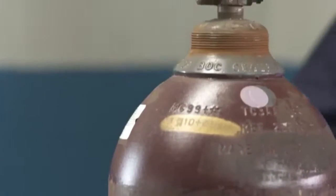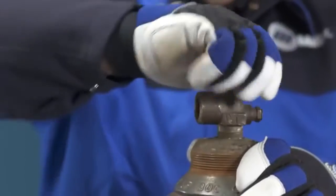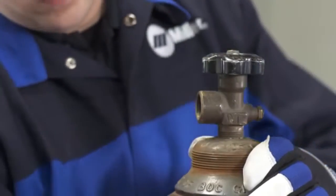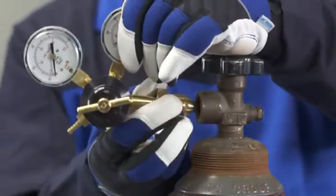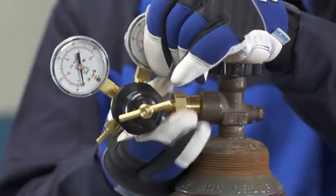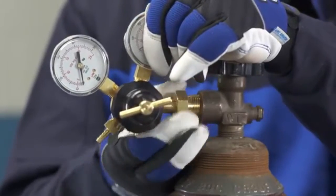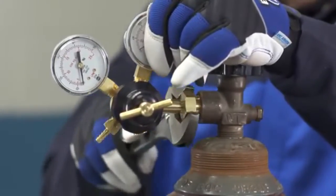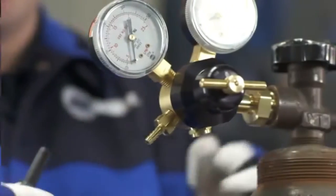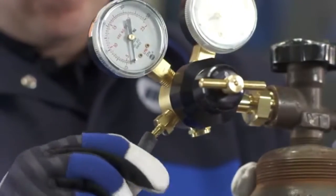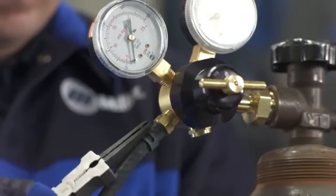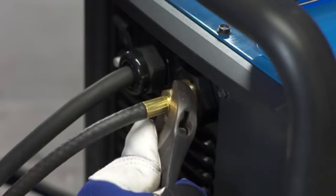Make sure the cylinder is turned away from you. Open the cylinder valve slightly to purge any debris from the outlet and then close it. Thread the large fitting end of the regulator into the top of your gas bottle. Use a wrench to tighten. Next, connect the gas hose to the regulator. Attach the hose from the regulator to the back of the machine and tighten the connection with a wrench.